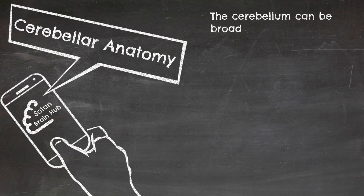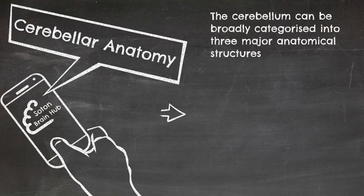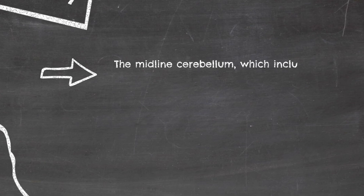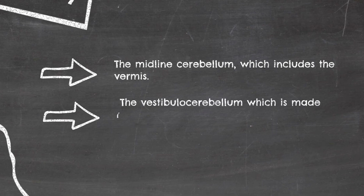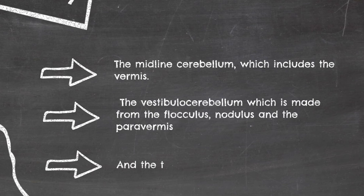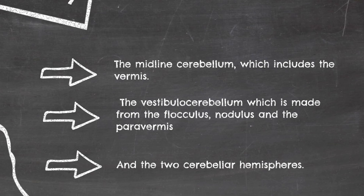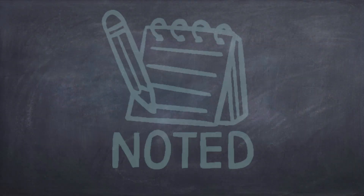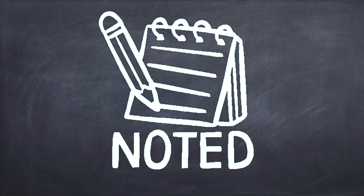The cerebellum can be broadly categorised into three major anatomical structures: the midline cerebellum, which includes the vermis; and the vestibulocerebellum, which is made from the flocculus, nodulus, and the paravermis. Cerebellar syndromes can be categorised based on the anatomical areas affected, as this will determine the symptoms the patient elicits. However, there is significant clinical overlap.